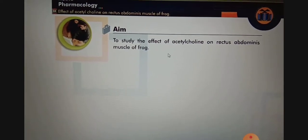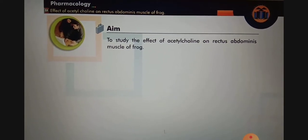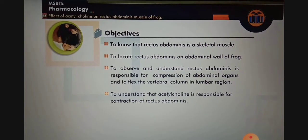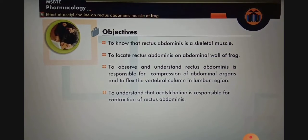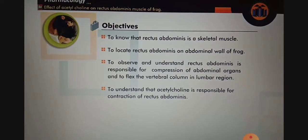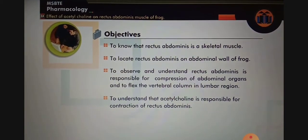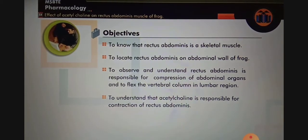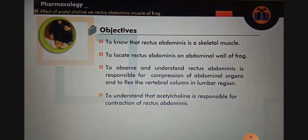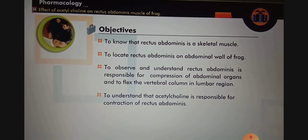The aim of this experiment is the effect of acetylcholine on rectus abdominis muscle of frog. The objectives are: to know that rectus abdominis is a skeletal muscle; to locate rectus abdominis on the abdominal wall of frog; to observe and understand that rectus abdominis is responsible for compression of abdominal organs and flexing the vertebral column; and to understand that acetylcholine is responsible for contraction of rectus abdominis.